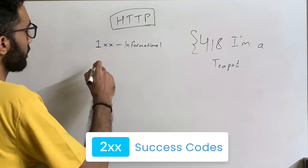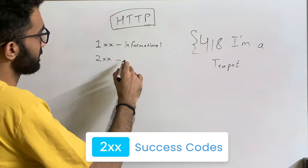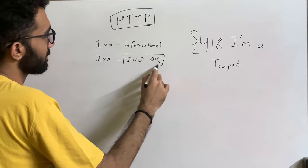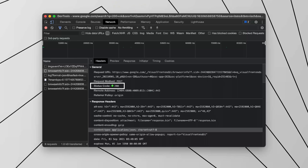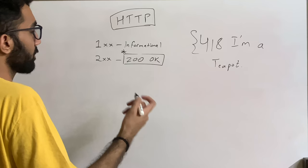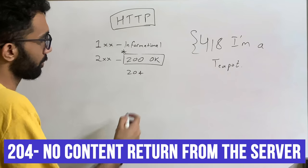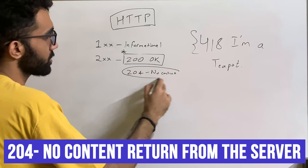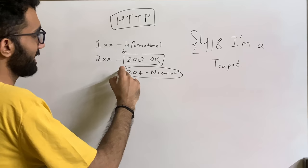In the 200 range, the most common one on the internet is status code 200 OK, which means whatever request you made, the operation was successful on the server. There are a few more codes in this range. For example, 204 means there was no content returned from the server — just a confirmation — and is mostly used with caching updates like updating the header cache.